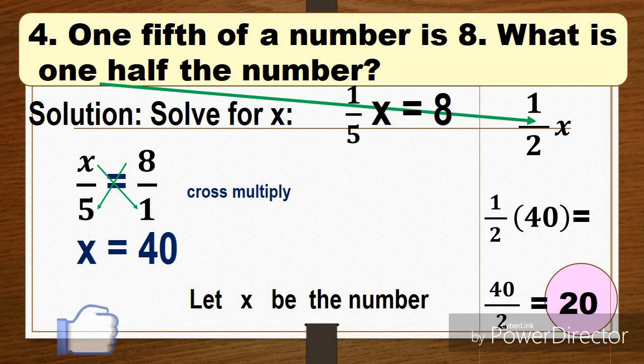So again, the number is x. So what is one half? We're going to have one half x, and then we're going to substitute the value of x, which is 40. One half times 40. One times 40 equals 40 over 2, then 40 divided by 2 equals 20. So the answer is 20.